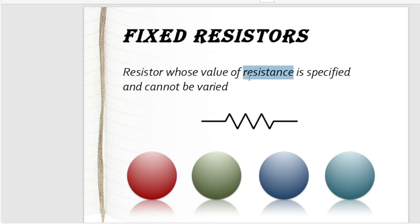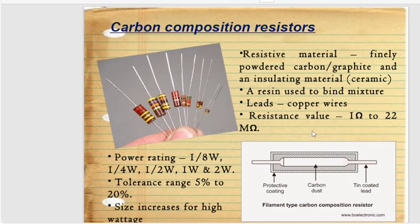The first type of fixed resistor is the carbon composition resistor. Its resistive material is finely powdered carbon, graphite, and an insulating material — a resin — used to bind the mixture. If you check out the body of the resistor you will see the resin binding the mixture, and it uses copper wire leads. The resistance value is between 1 ohm and 22 mega ohm.